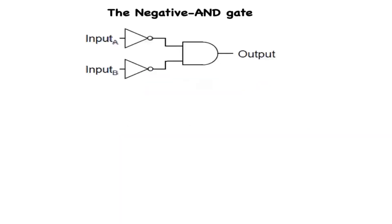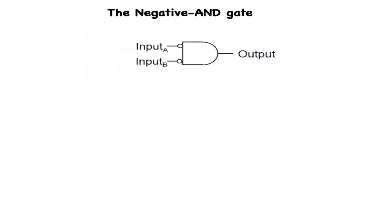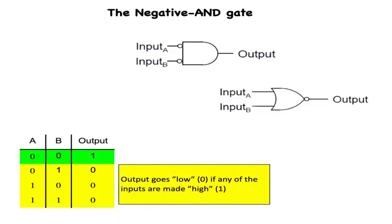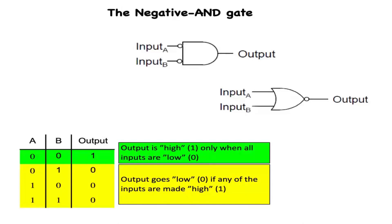Another gate function is the negative AND gate. The negative AND gate functions the same as an AND gate with all its inputs inverted, connected through NOT gates. In keeping with standard gate symbol convention, these inverted inputs are signified by bubbles. Contrary to most people's first instinct, the logical behavior of a negative AND gate is not the same as a NAND gate. Its truth table is actually identical to a NOR gate. The output goes low (0) if any of the inputs are made high (1). The output is high (1) only when all inputs are low (0).